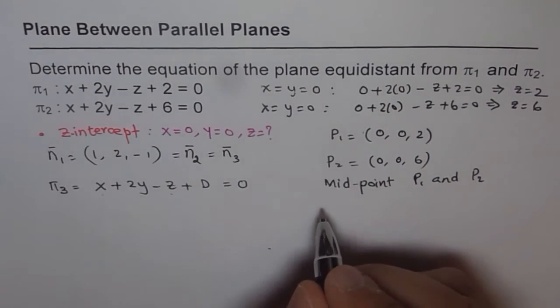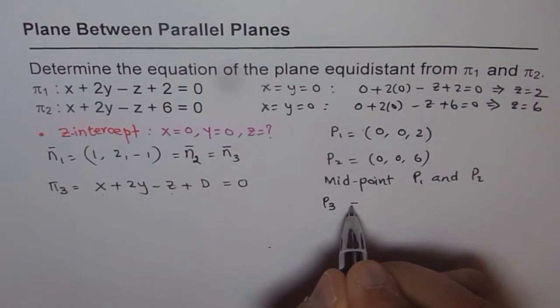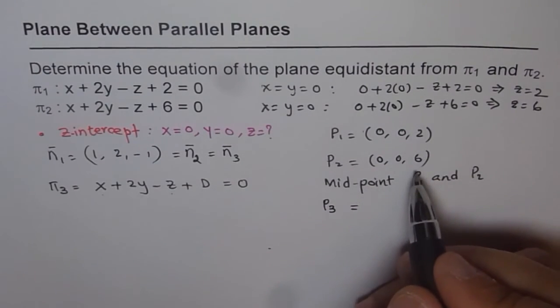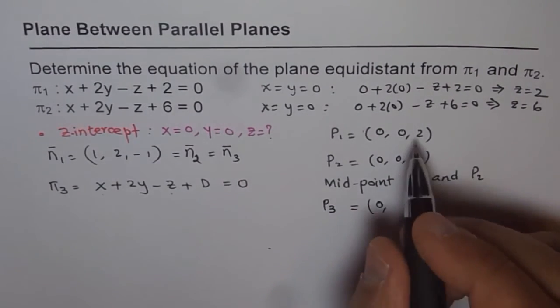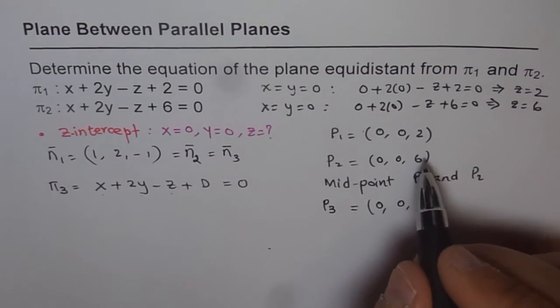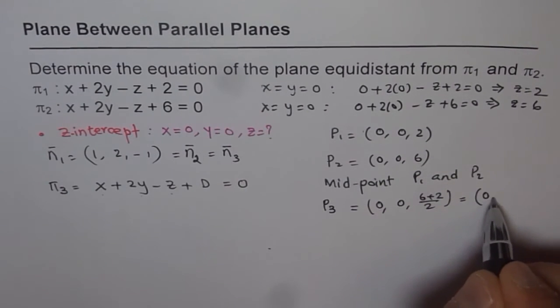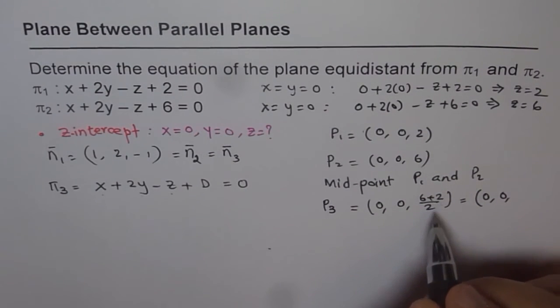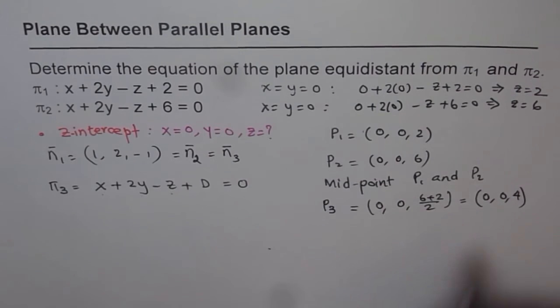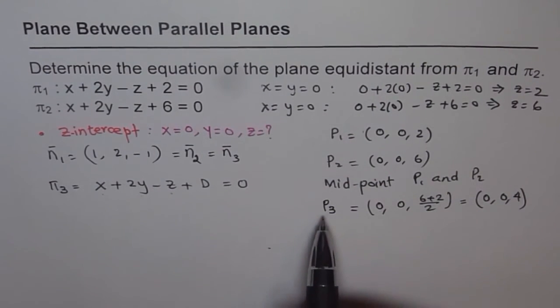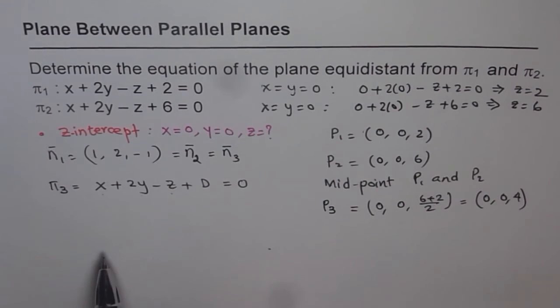So midpoint, let us call this as P3. So P3 will be equals to the average of these two. So that z-intercept is going to be (0, 0, (6 + 2)/2), which is equals to (0, 0, 4). 6 plus 2 is 8, 8 divided by 2 is 4. So that is the point. We will use this point in our equation and find what d is.